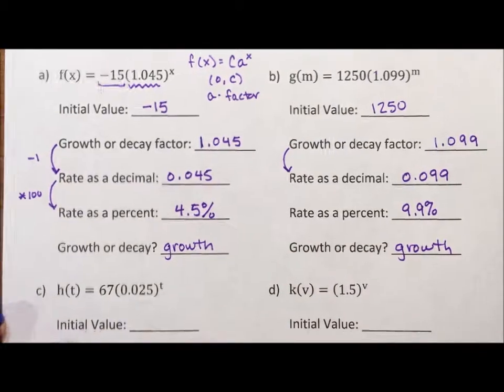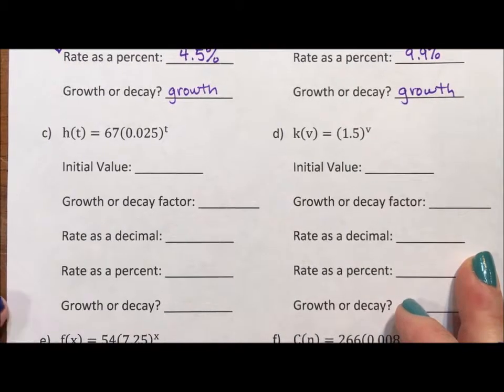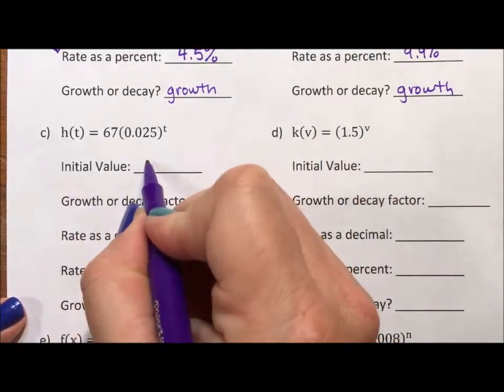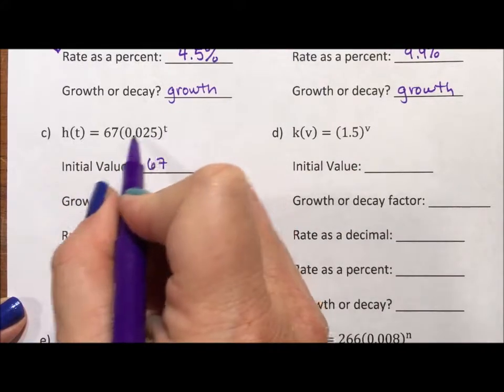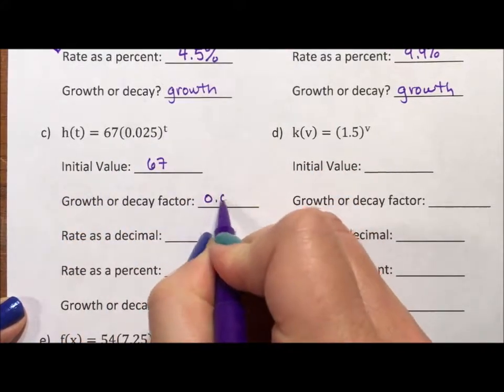Okay. So let's look at a couple more. Now, our initial value here is 67. It's a number not without an exponent. The number with an exponent is 0.025.